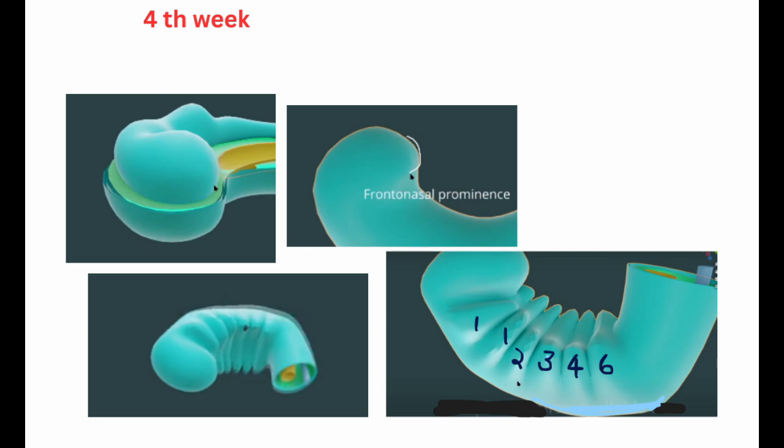As the neural tube is formed, there are bulges on the lateral surface of the embryonic head called the pharyngeal arches, just caudal to the frontonasal process. The first arch is subdivided into two parts: the maxillary process and the mandibular process. The maxillary process surrounds the oropharyngeal membrane. Caudal to this are the second, third, fourth, and sixth arches.